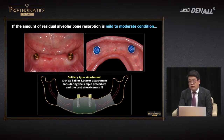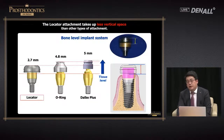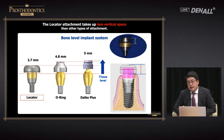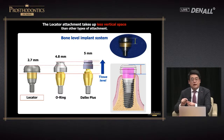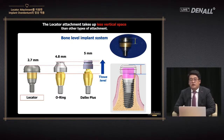Fortunately, the locator attachment that will be addressed today requires comparatively small vertical space compared with other types of attachment. Therefore, even when there is only a limited amount of ridge, when making the denture we can prevent the denture base resin from becoming too thin or interfering with artificial teeth.